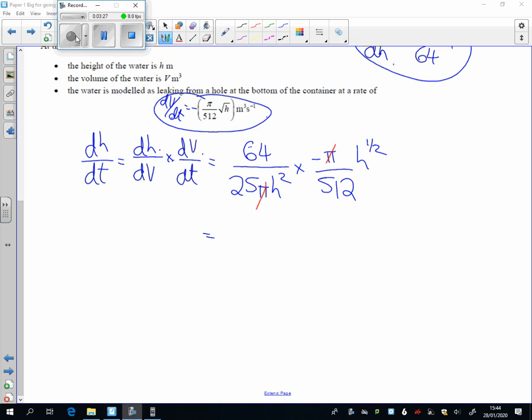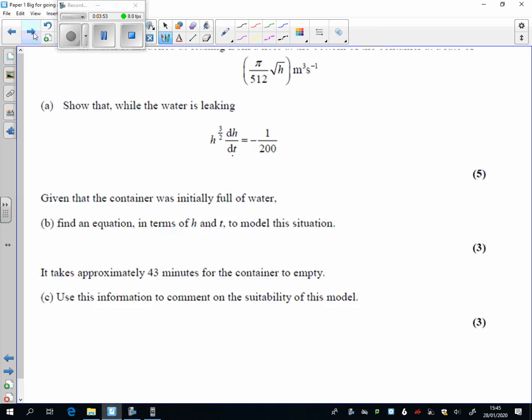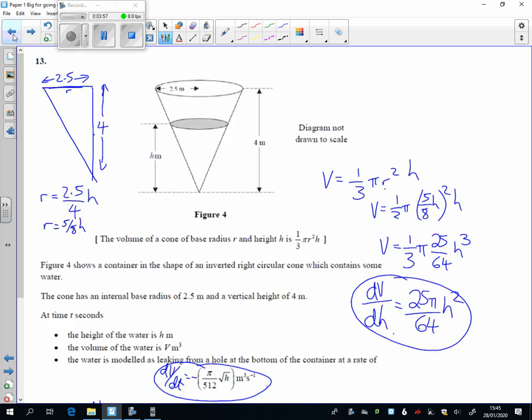We are virtually there. dh/dt equals—so I've got 25 times 8 on the bottom, that's 200, I've got the minus from over there, and I've got h to the half divided by h squared, so that's h to the 3 over 2. Is that what we wanted? I really don't know, let's have a look.